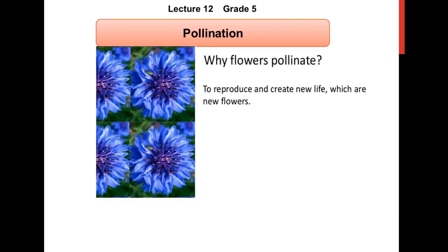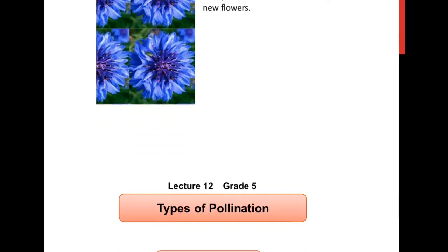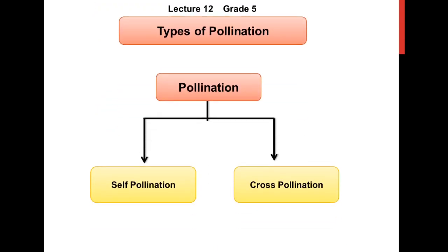Pollination is very important for the plants to reproduce and create new life, which are new flowers. Pollination is of two types: self-pollination and cross-pollination.